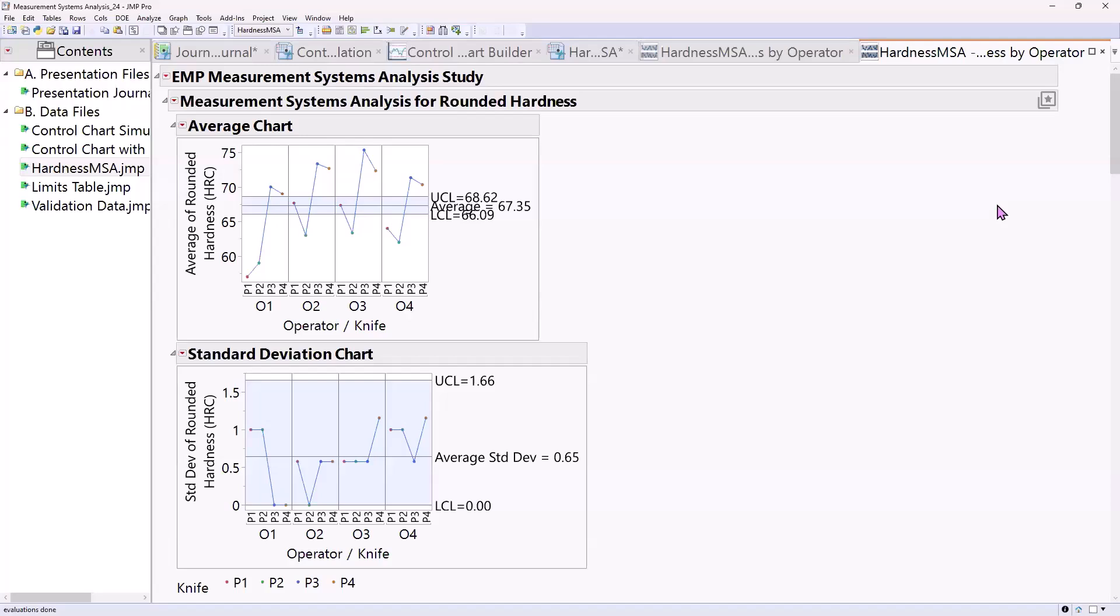You're not going to go terribly wrong using gauge R&R until you start looking at gauges that have higher percent R&Rs and you're thinking about whether you need to improve it or not.